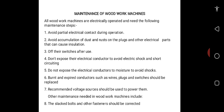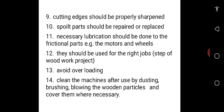Recommended voltage sources should be used to power the machines. Other maintenance strategies include: slacked bolts and other fasteners should be corrected; cutting edges should be properly sharpened; spoiled parts should be repaired or replaced; necessary lubrication should be done to the frictional parts, for example the motors and the wheels. The machine should be used for the right jobs for the steps of the woodwork project needed. Avoid overloading the machine, and clean the machines after use by dusting, brushing, blowing the wooden particles, and covering the machines where necessary.